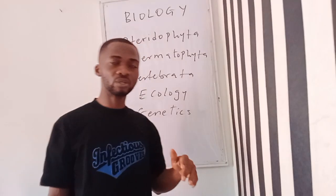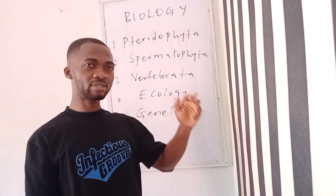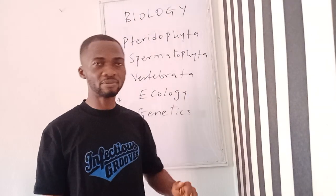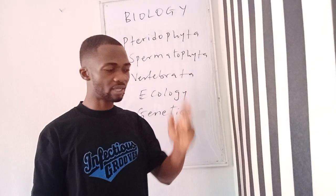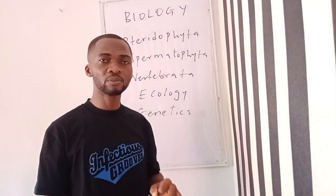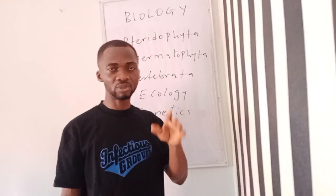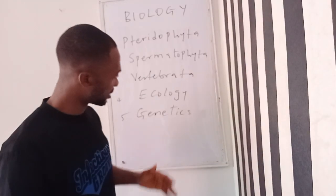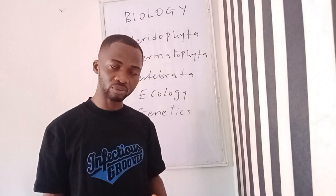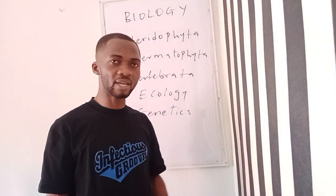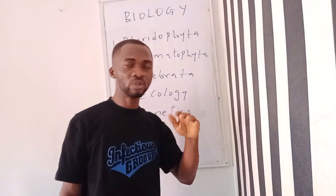Remember in the first phase we talked about the lower plants and the higher plants. I categorized Bryophyta, Thallophyta, and Telophyta as lower plants. One of the differences I mentioned between the lower plants and higher plants is that lower plants do not have the vascular bundle — that is, the xylem and phloem — but you can see that in the higher plants.